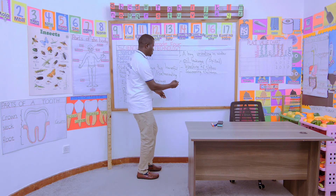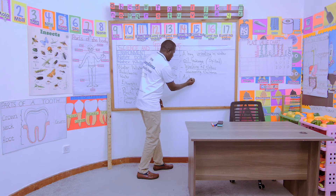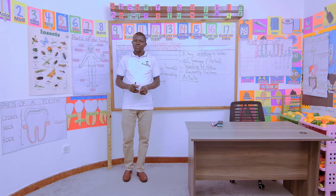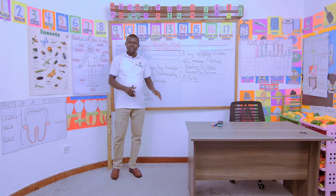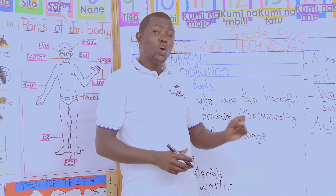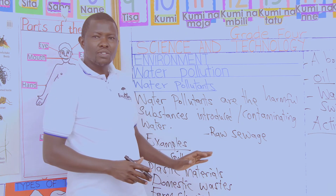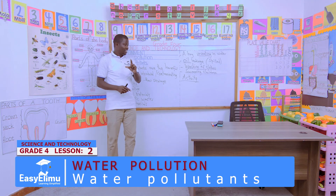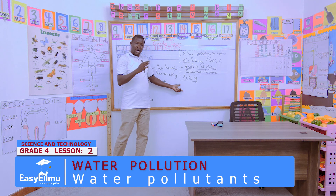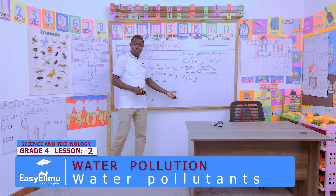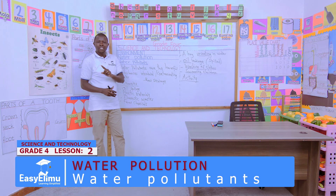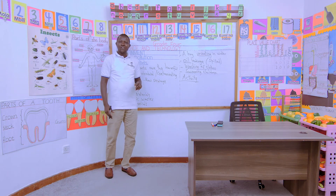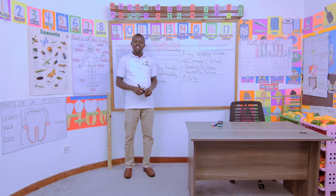Now I have an activity for us to do. As you go home, remember: in our locality we have rivers and sources of water. I would like you to observe some of these pollutants which you will find within our locality as you go home. Kindly take photos and come with them tomorrow so that we can talk more on them as we stick them in our portfolio. As you go home, take photos of pollutants in our locality. That marks the end of our lesson for today.